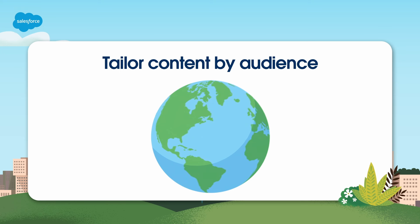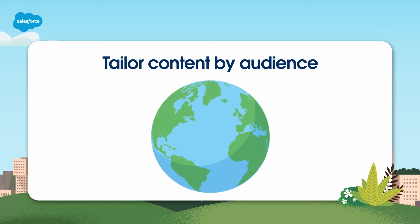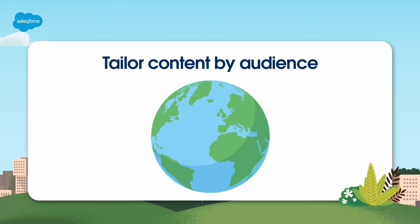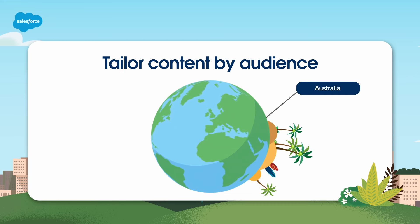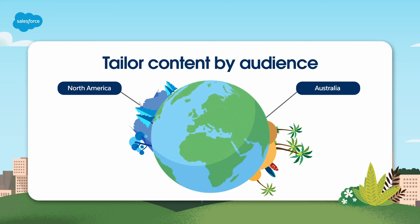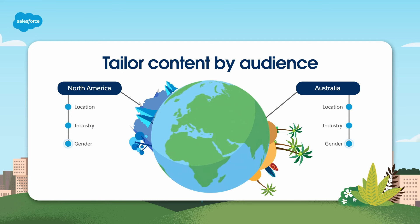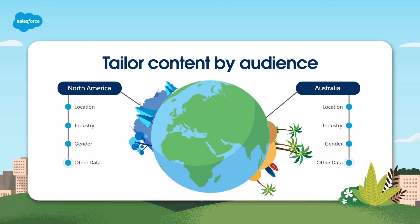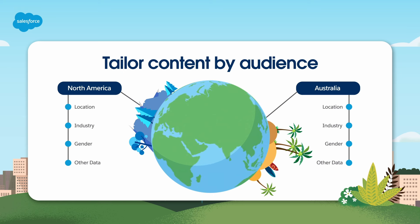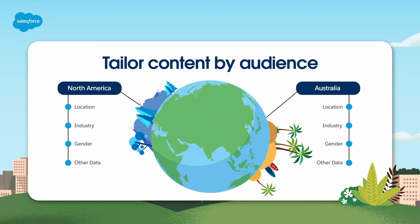Decide how content will vary by audience. For example, if you have subscribers all over the globe, you might want to show summertime content to customers in Australia while showing wintertime content to subscribers in North America. Use location, industry, gender, and other data to segment your audience, so that each subscriber sees relevant, compelling content designed specifically for them.